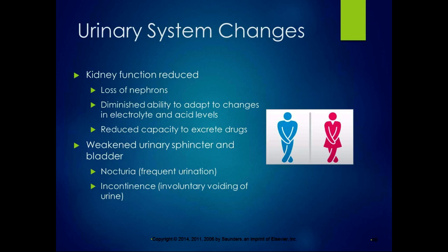Urinary system changes: kidney function is reduced because of loss of neurons, and the kidneys have a diminished ability to adapt to changes in electrolyte and acid levels. Loss of nephrons means diminished ability to adapt and a reduced capacity to excrete drugs. If an elderly person is given the same medication as a younger person, it might take longer for them to clear it from their system, potentially reaching toxic levels more easily because they're not excreting it as quickly. A weakened urinary sphincter and bladder can cause nocturia — frequent urination — and incontinence.